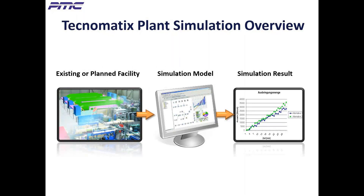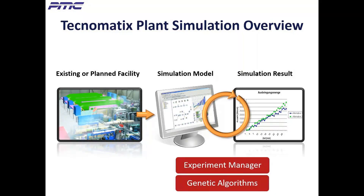Technomatix Plant Simulation is a powerful software tool that allows you to create a digital model that simulates the operation of your existing or planned facility. The results of a simulation run let you analyze your facility, including determining throughput and location of bottlenecks. PlantSim's Experiment Manager lets you automate what-if games, and genetic algorithms can help you find an optimal solution even quicker. This lets you quickly show the bang for the buck of different improvement scenarios.